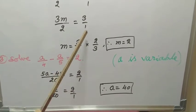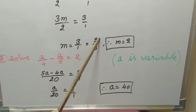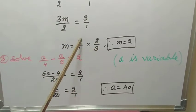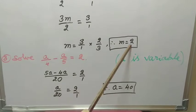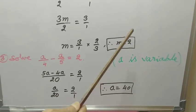M equal to 3 by 1 into this cross-multiplied value 2 by 3. 3, 3, 3 cancels, 2 by 1 means 2. So that is the value of M. That is the root of that equation.